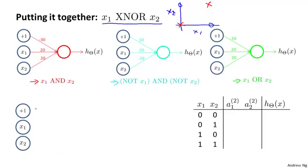Let's draw the network. I'm going to take my input plus 1, x1, x2 and create my first hidden unit here. I'm going to call this a2^(1) because that's my first hidden unit. And I'm going to copy the weights over from the red network, the x1 AND x2 network. So minus 30, 20, 20.